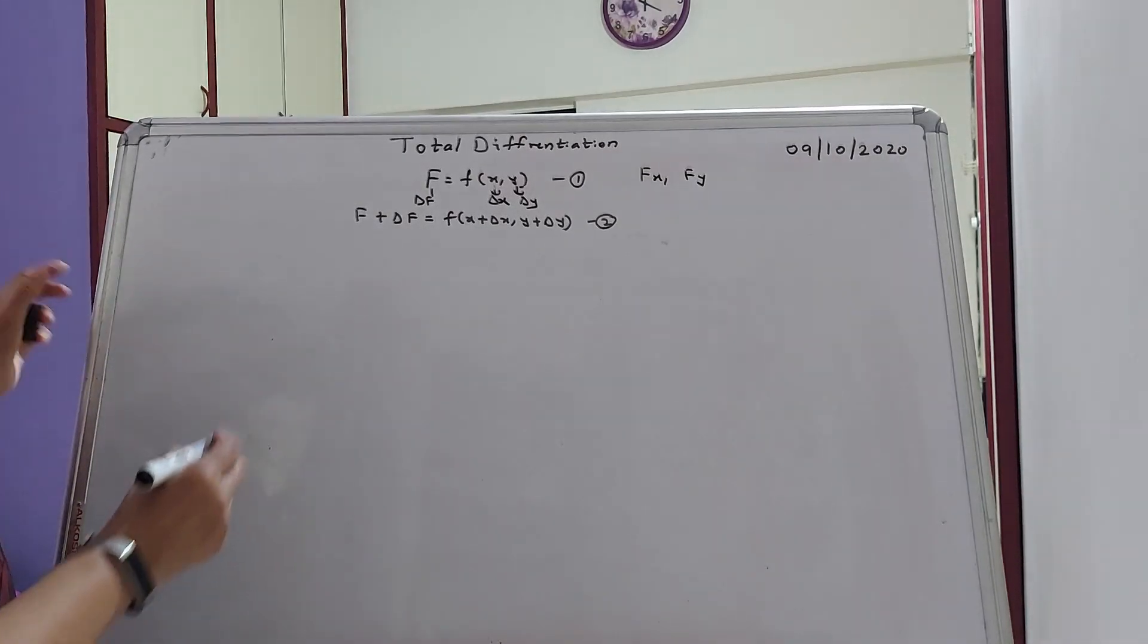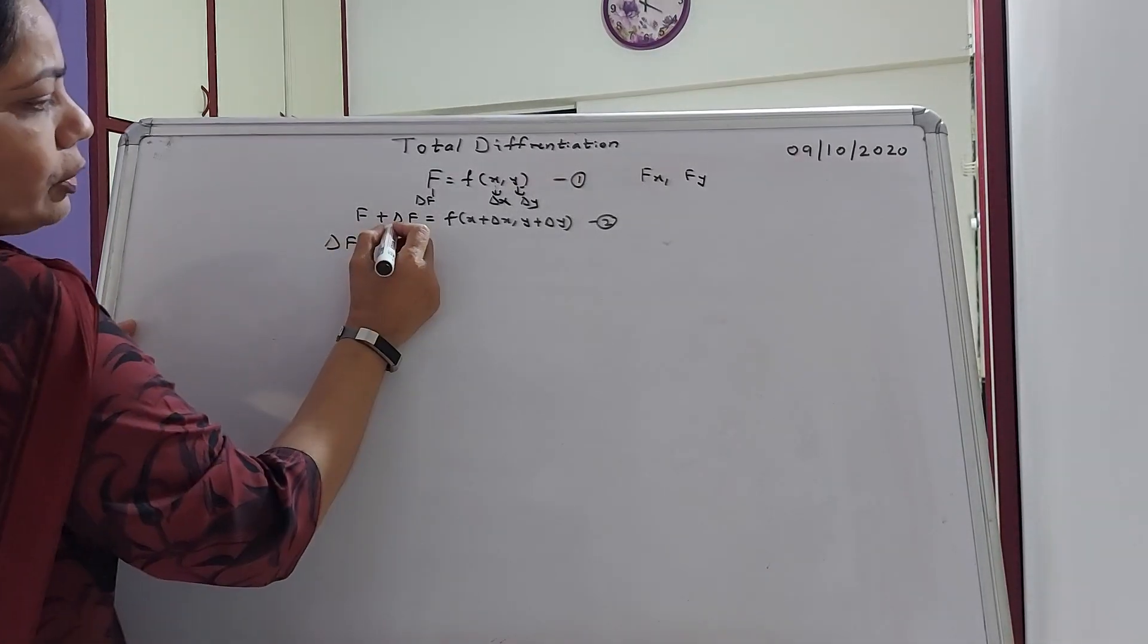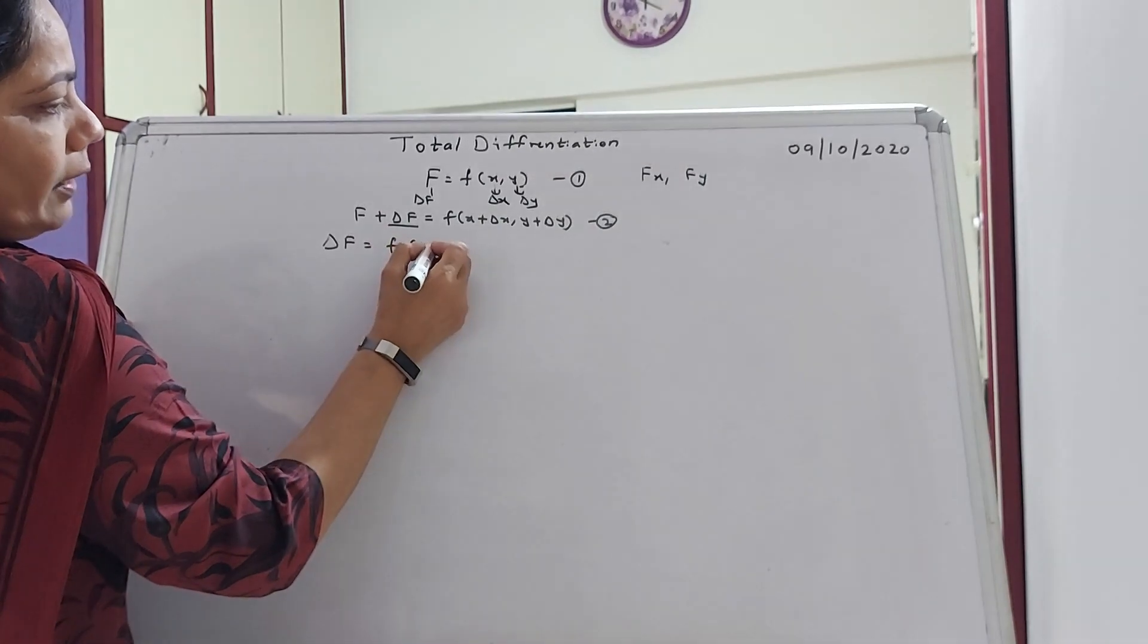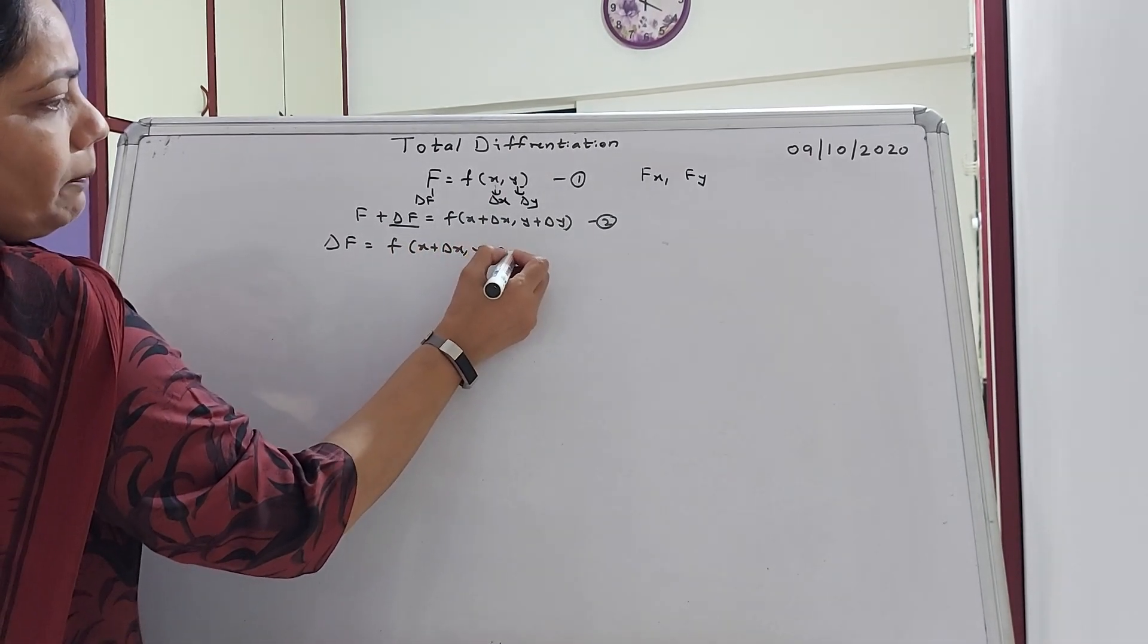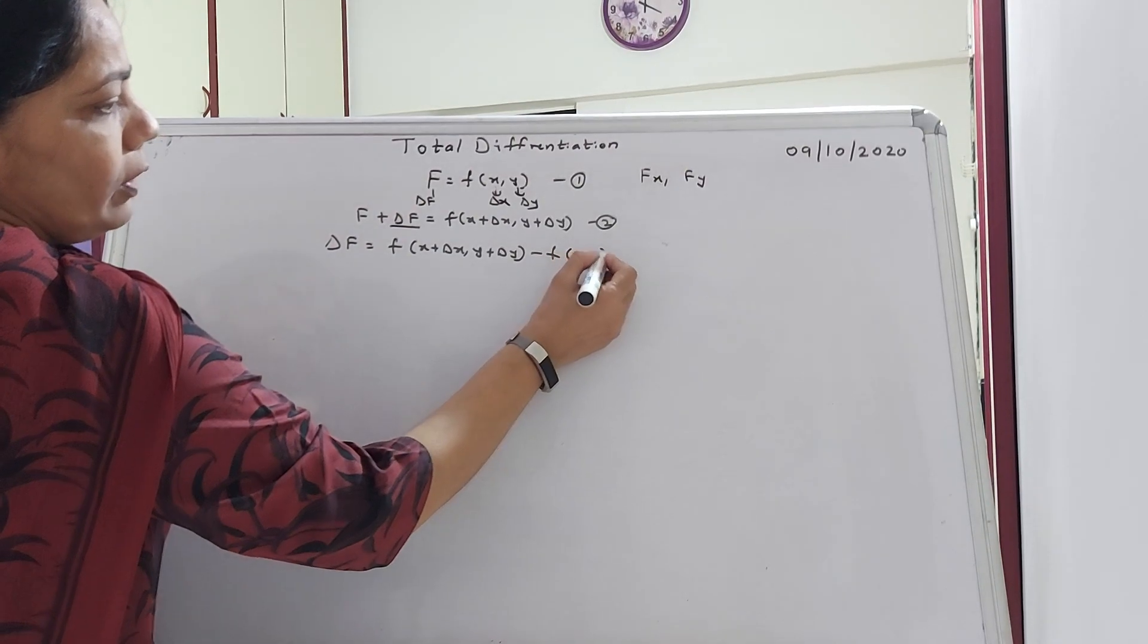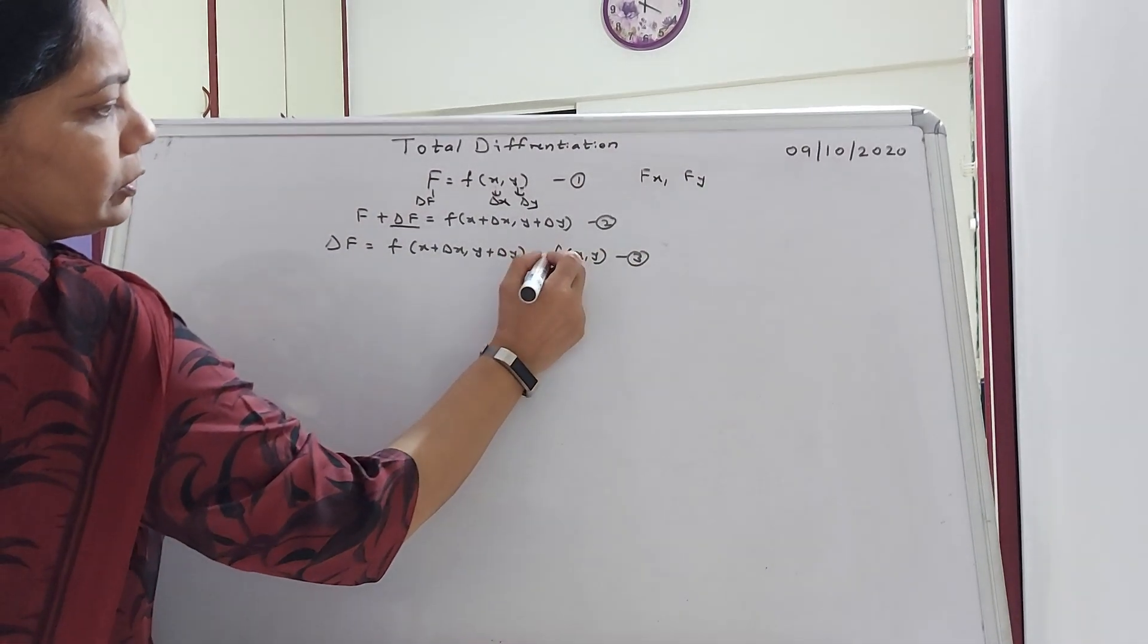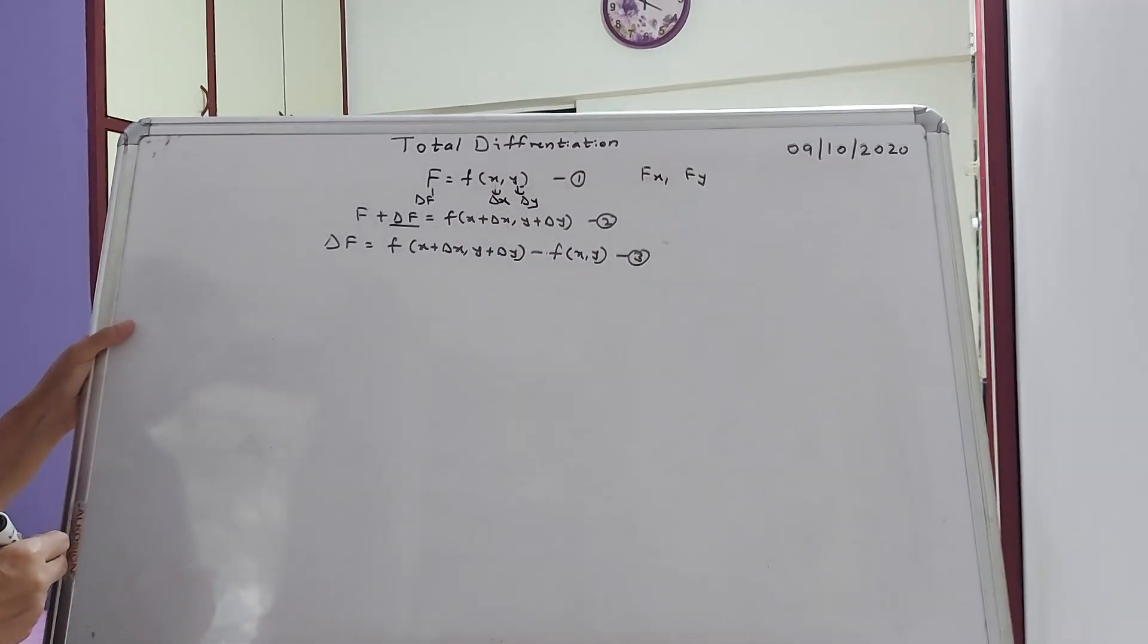So in that case I can write that F plus delta F will be F of X plus delta X comma Y plus delta Y, equation number 2. Earlier I had function F with two variables X and Y, as both change with the small increment, even this will change to this value. Next, now what I want? I need the value of delta F. So what is delta F now? A small change in F.